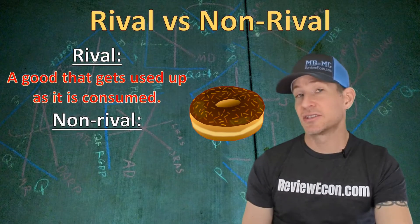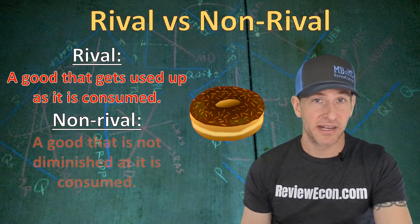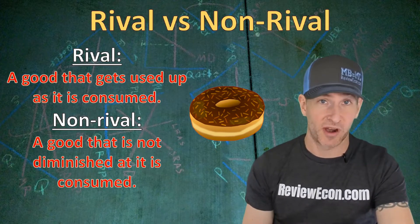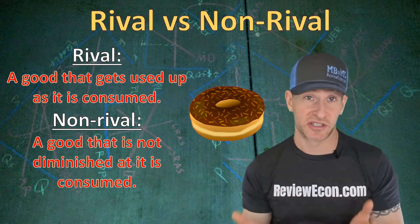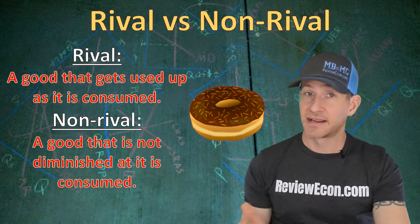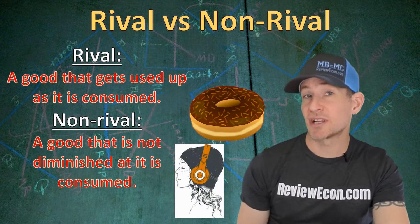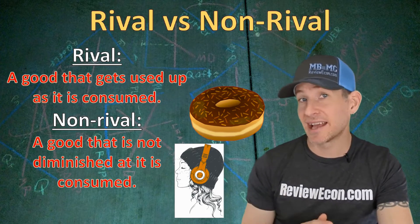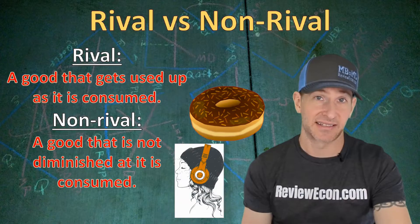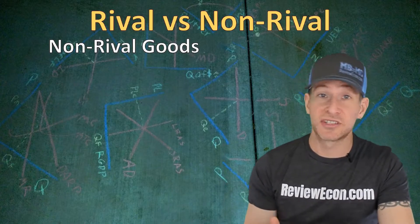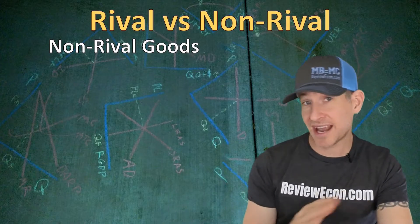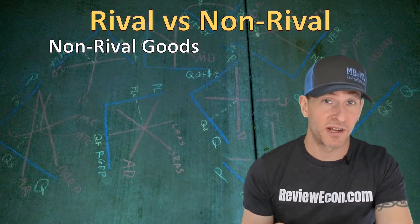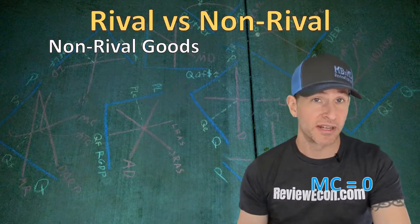Non-rival goods, on the other hand, are goods that are not diminished in quantity as a result of some consumers purchasing or using the product. That means countless consumers can consume the product at the same time. An example of a non-rival good is streaming music services. When I listen to my Spotify playlist, there isn't less music for you to listen to at the exact same time. Because non-rival goods have shared consumption, countless people can enjoy the good simultaneously.